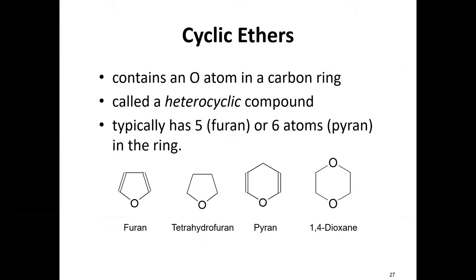Sometimes we find ethers in cyclic form, where the oxygen itself sits between two carbons inside a ring structure — not just on the side, but part of the ring. We call these heterocyclic compounds because part of the ring is an oxygen instead of carbon. We typically only see them in five- or six-membered rings: a five-carbon ring is called a furan, and a six-carbon ring is called a pyran.